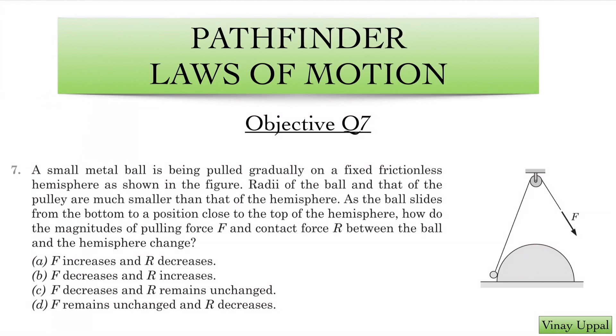Let's have a look. A small metal ball is being pulled gradually on a fixed frictionless hemisphere as shown in the figure. The radii of the ball and that of the pulley are much smaller than that of the hemisphere. As the ball slides from the bottom to a position close to the top of the hemisphere, how do the magnitudes of the pulling force F and the contact force R between the ball and the hemisphere change?